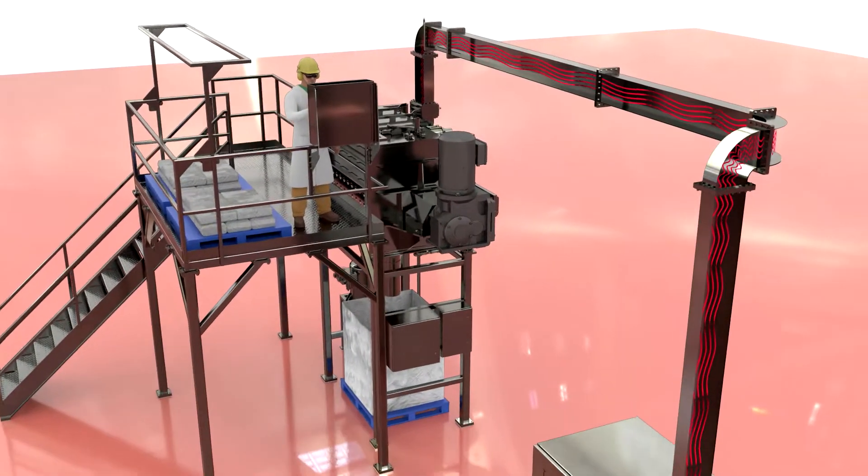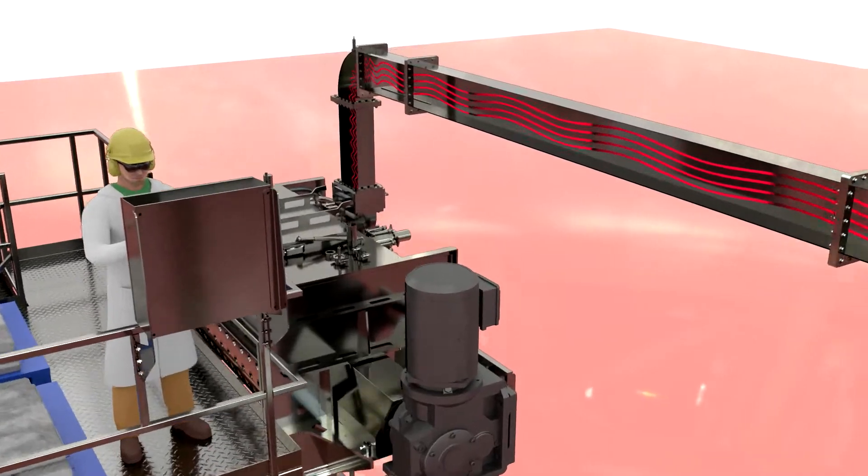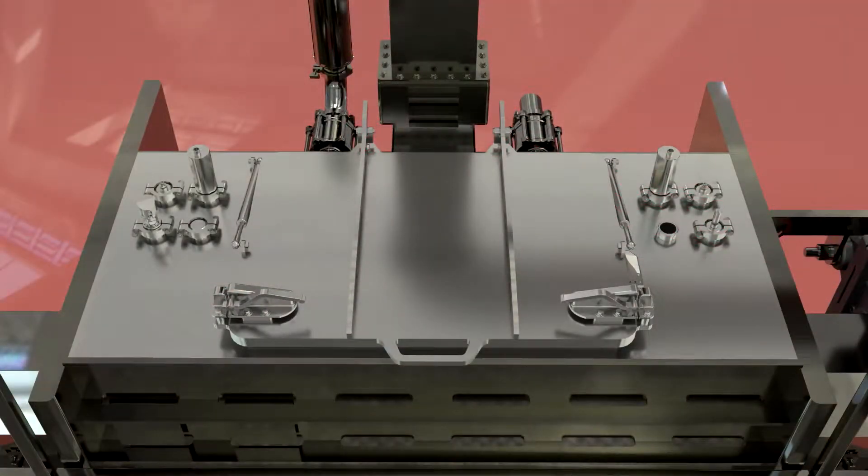Microwave energy from the transmitter is directed through the waveguide and into the mixer, allowing material to be heated and dried directly.